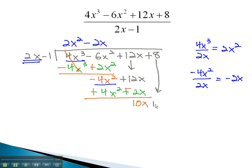Bring down the plus 8 to repeat one last time. 10x divided by 2x is just 5. Multiplying 5 by the 2x minus 1 gives us 10x minus 5.